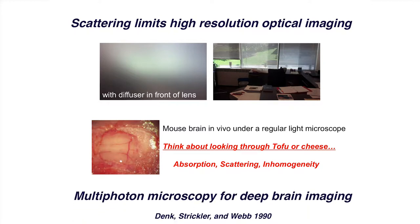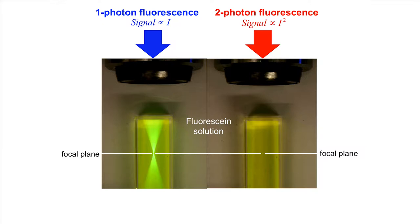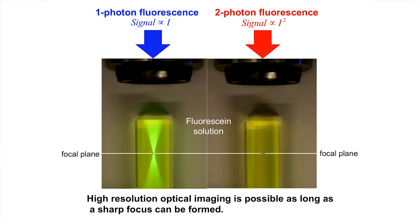The technology we use is called multiphoton microscopy, invented at Cornell in 1990. With one-photon excitation, you see fluorescence above and below the focal plane — it's not spatially confined. With two-photon excitation, because fluorescence goes as intensity squared, only the focus gives significant excitation with not much above or below. So imaging deep in scattering tissue is conceptually simple: form a sharp focus in 3D, scan it, and you form an image.